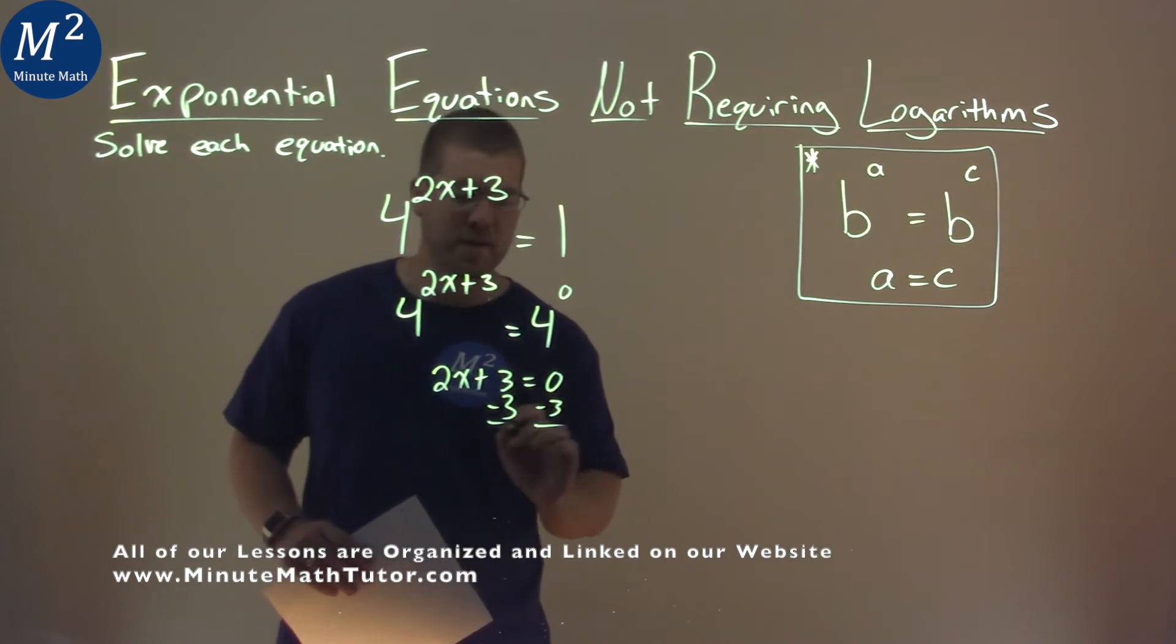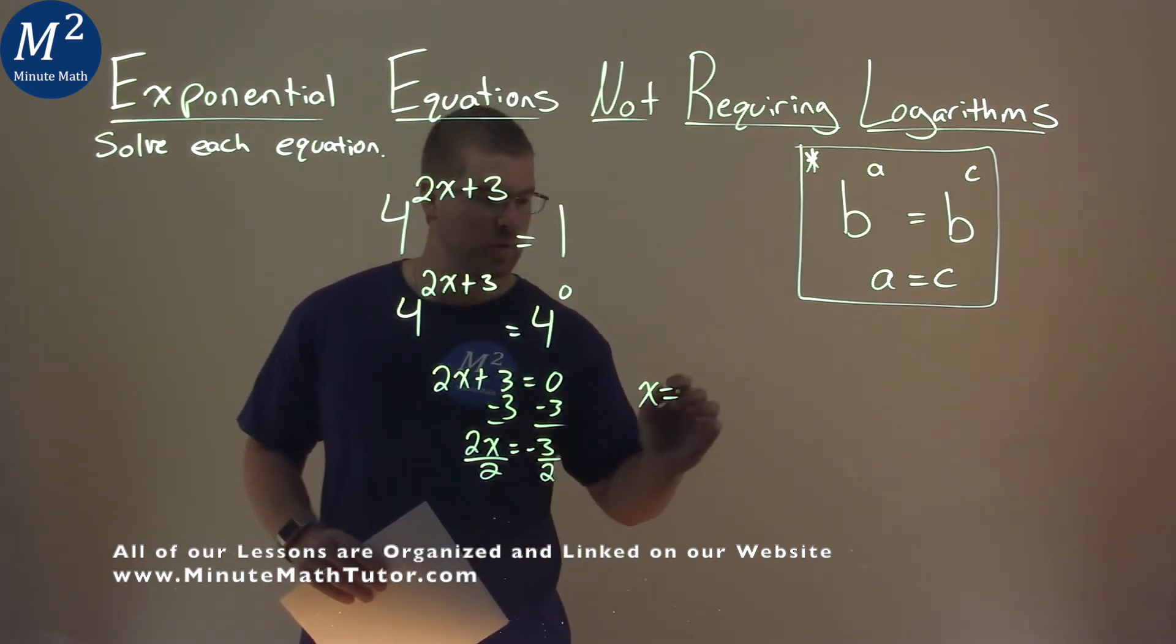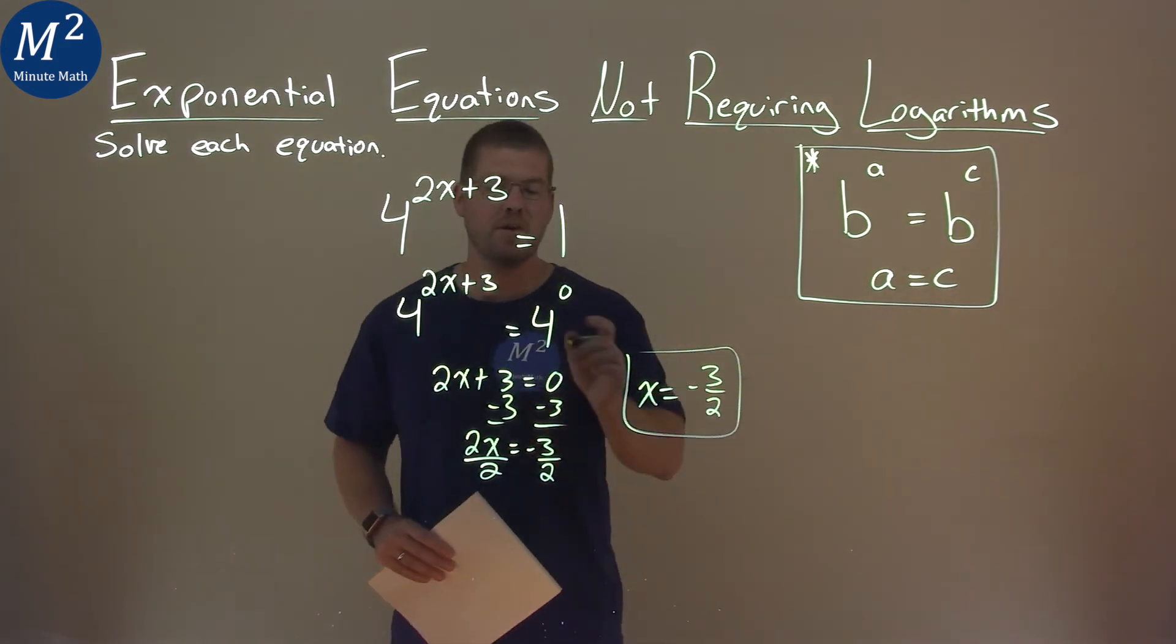Subtract the 3 to both sides, and we have 2x equals negative 3. Divide both sides by 2, and x equals negative 3 halves, and that is our final answer.